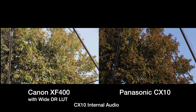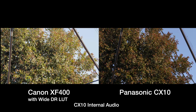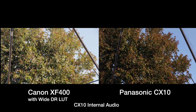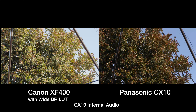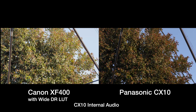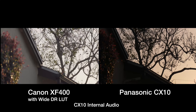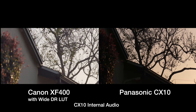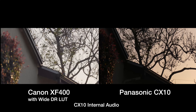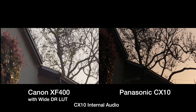They're both set to their natural daylight white balance. Now I'm closer again. With the Canon I reduced the ND to 1/4, and it's at F4. I'm just trying to get the exposure correct. And the Panasonic I have at F4 with an ND 1/4, and I also increased the gain to 9 dBs.